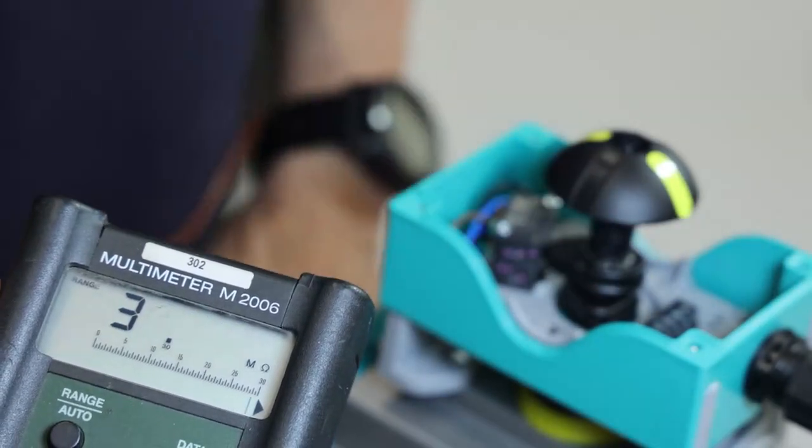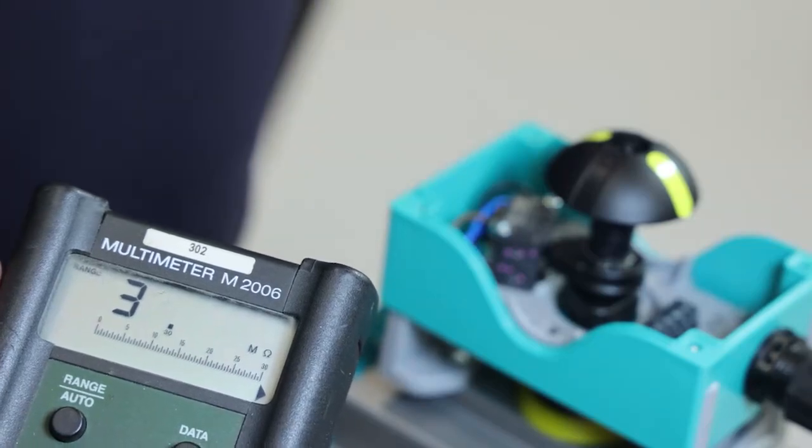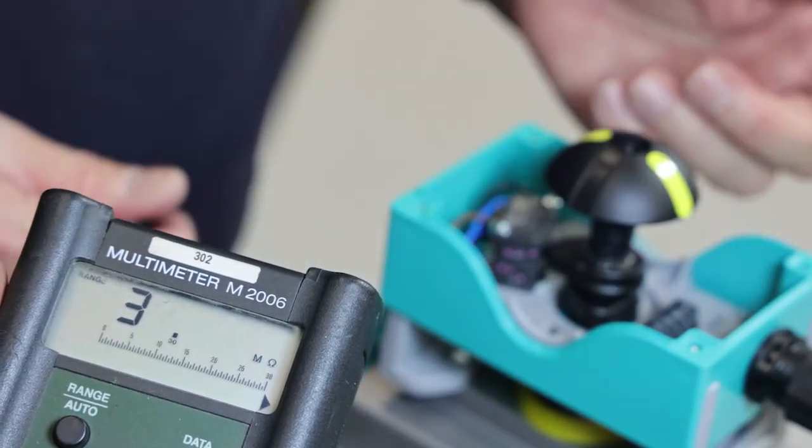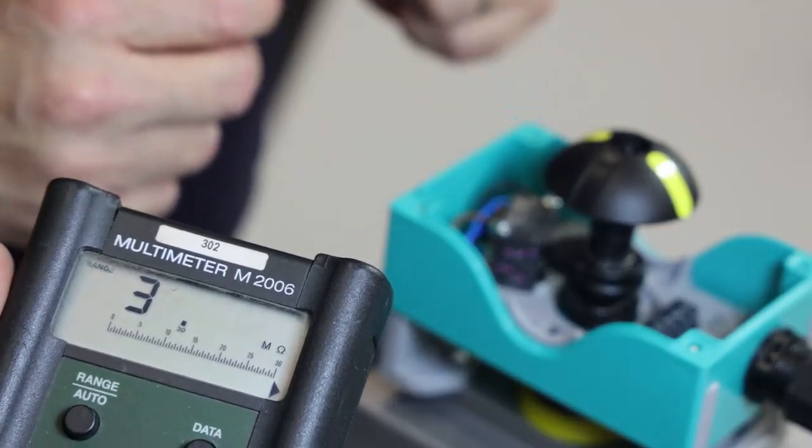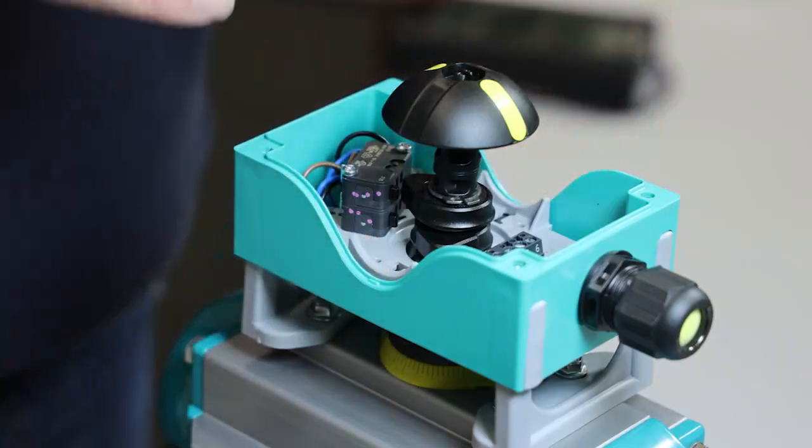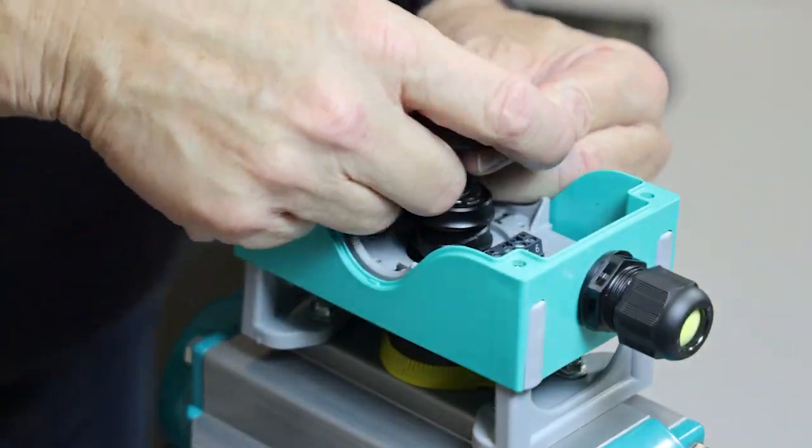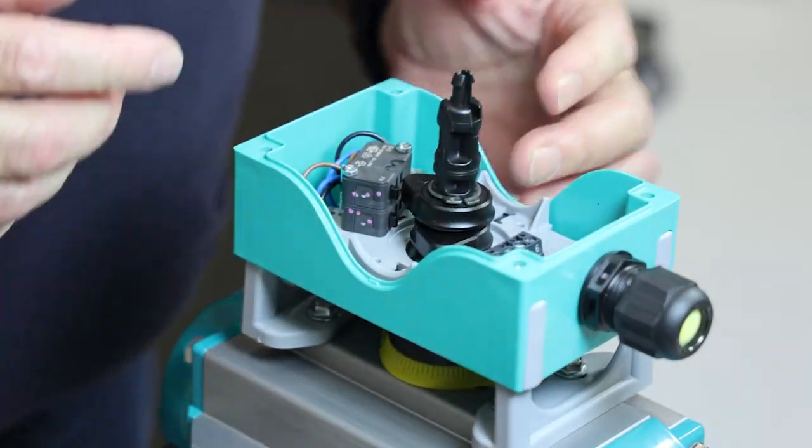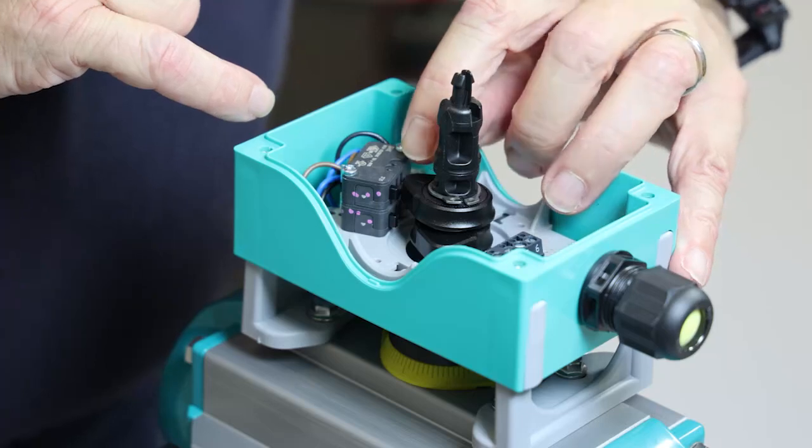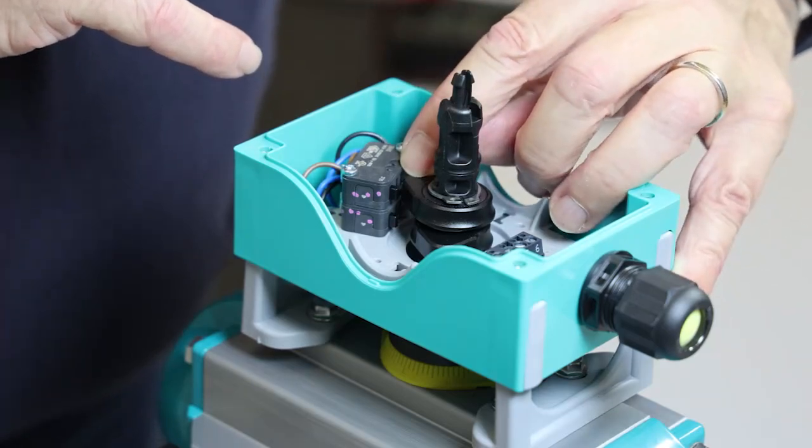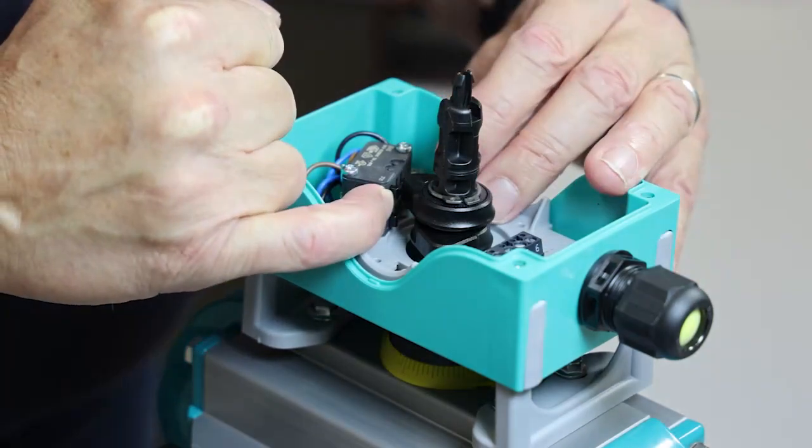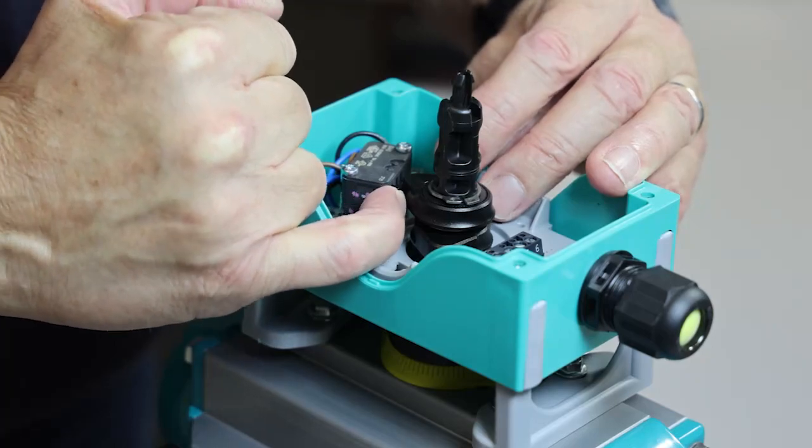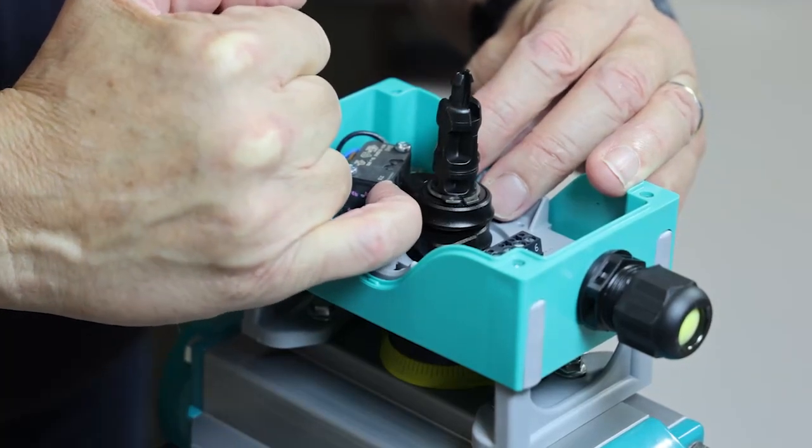Now, in case the signal is not okay, we need to readjust the limit switch cam. To readjust it properly, we remove the position indicator. We see now that the end of the cam is not touching the small cam of the limit switch. It's not activated.